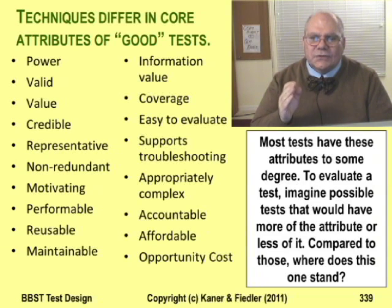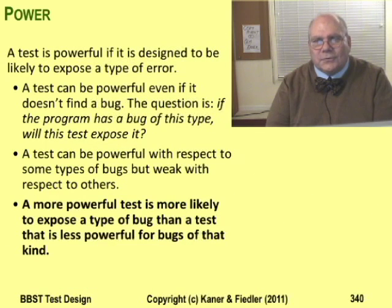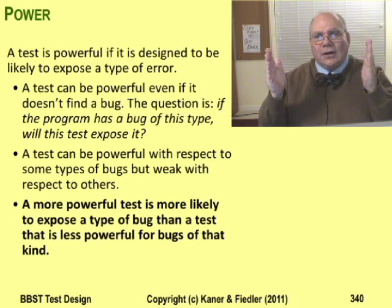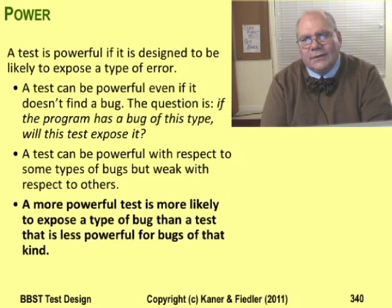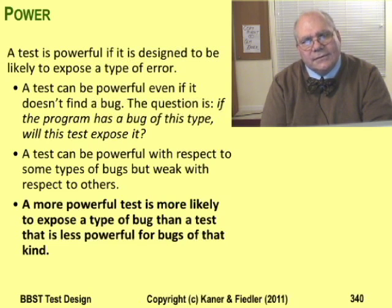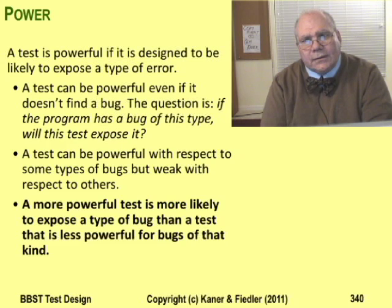Every technique has its own core attributes. The 18 attributes I list here characterize many of the most important differences among the techniques. Now I'm going to walk through the different attributes — covering some in a bit of detail and skimming the rest. You can get more details from the paper on what makes a good test case. Power is the ability of a test to expose bugs. Finding a bug doesn't make a test powerful — even a weak test can find an obvious bug. And not finding a bug doesn't make a test weak; if there's no bug to find, the most powerful test in the world won't find it.